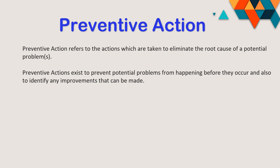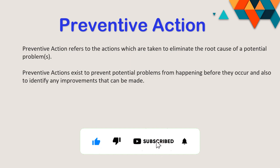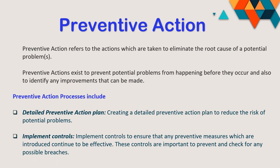When it comes to preventive action, it means action taken to eliminate the root cause and prevent quality issues in the future. Preventive action exists to prevent any potential problem before it occurs and to make sure we identify them clearly so they are not made in the first place. The preventive action process involves a detailed preventive action plan which creates a risk profile to identify potential risks or problems. Finally, implementation controls are introduced so that preventive measures are effective, and these controls are important to prevent and check any possible breaches in the future.